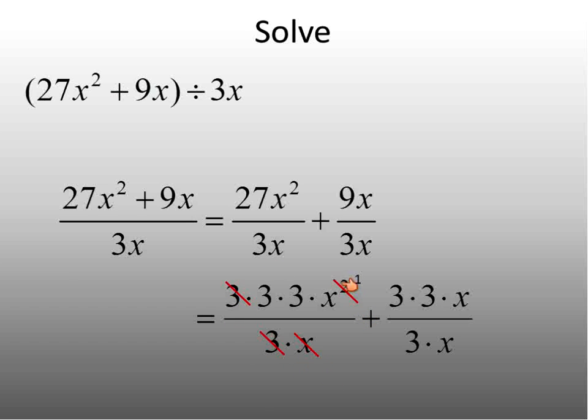So first I work this fraction, 3 and 3, x and x. I've canceled out one of these x's, so that leaves me with 1. And now I'm going to move on to the second fraction where I have 3 on the top and bottom and x on the top and bottom, both the numerator and denominator.